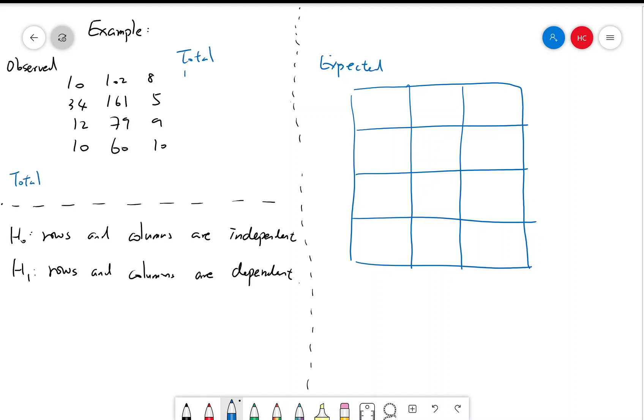So let me write down that for you. 66, 402, 402, 32, 32. And the total total is 500.